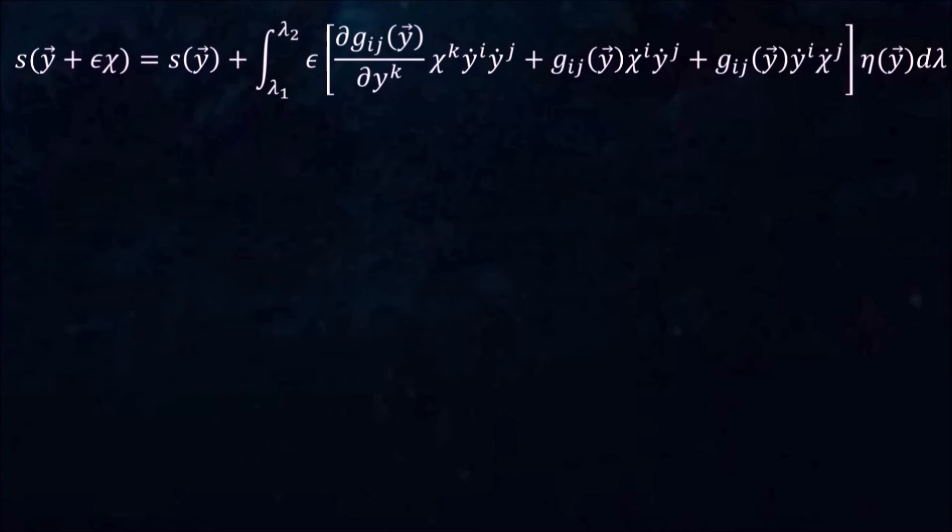But first, let's make our lives a little easier. I said at the beginning that lambda can be any parameter at all, and it is still true. However, if we choose lambda to be the distance traveled along the path, eta becomes 1.